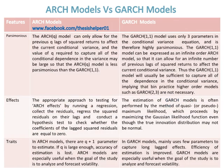The ARCH-Q model can only allow for the previous Q lags of squared returns to affect the current conditional variance. The value of Q required to capture all of the conditional dependence in the variance may be large, so the ARCH-Q model is less parsimonious than the GARCH(1,1). Whereas the GARCH(1,1) model uses only three parameters in the conditional variance equation and is therefore highly parsimonious.